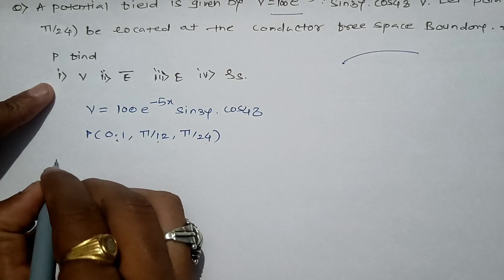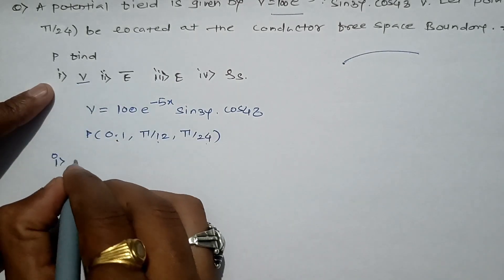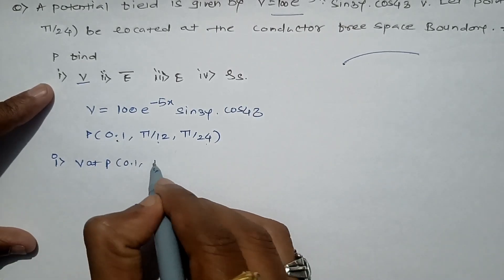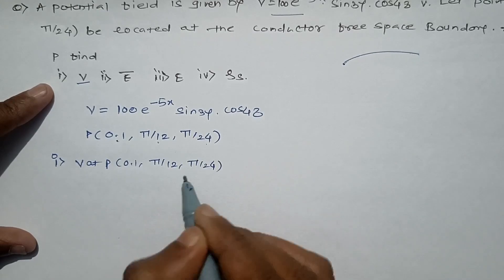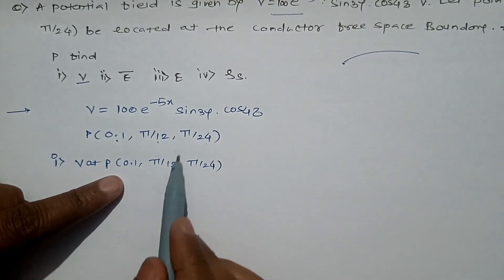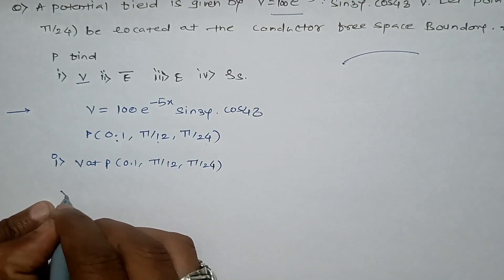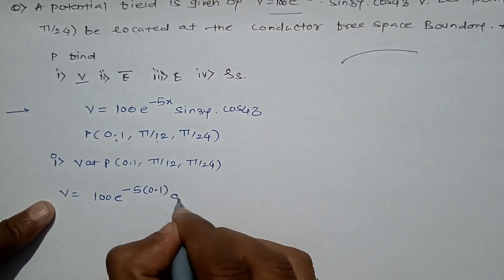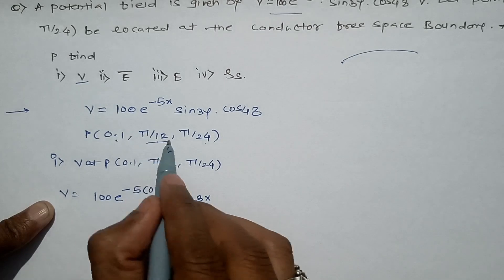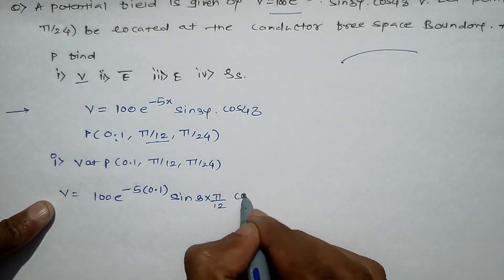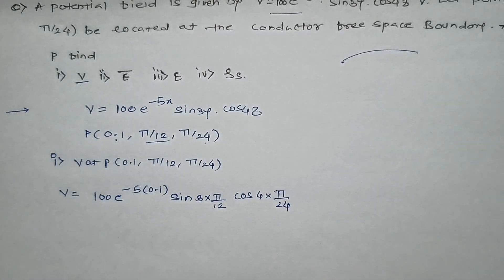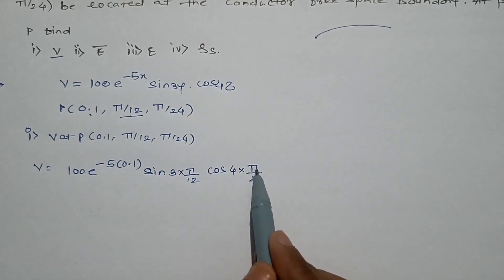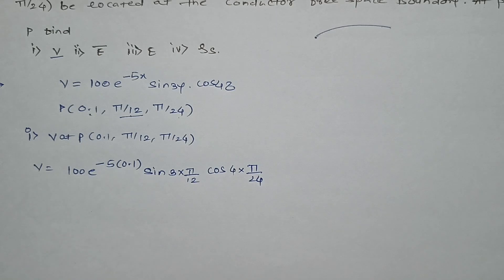First, we will find the magnitude of the potential at point P, where x = 0.1, y = π/12, z = π/24. We substitute these values: V = 100 into e raised to minus 5×0.1, multiplied by sin(3×π/12), multiplied by cos(4×π/24). Now we solve the angles 3π/12 and 4π/24 and multiply by the exponential term.